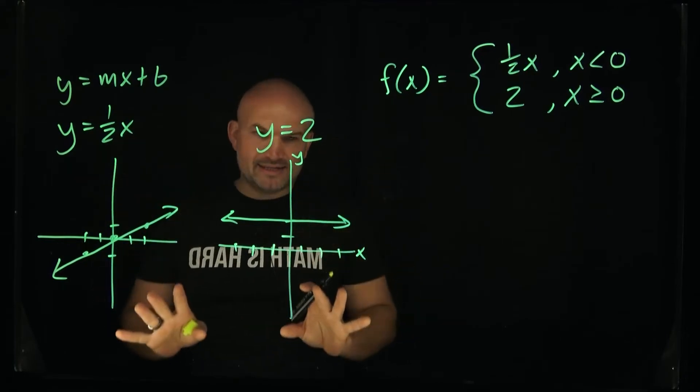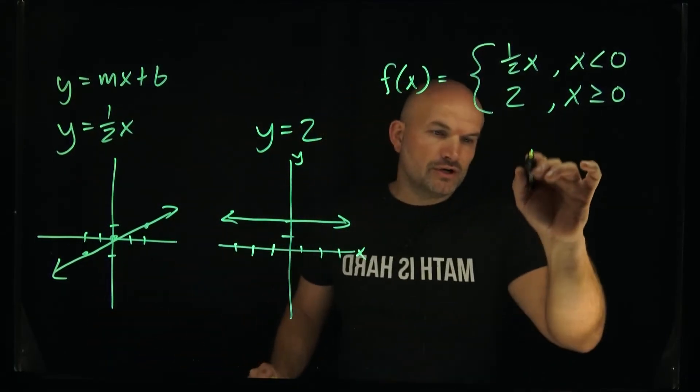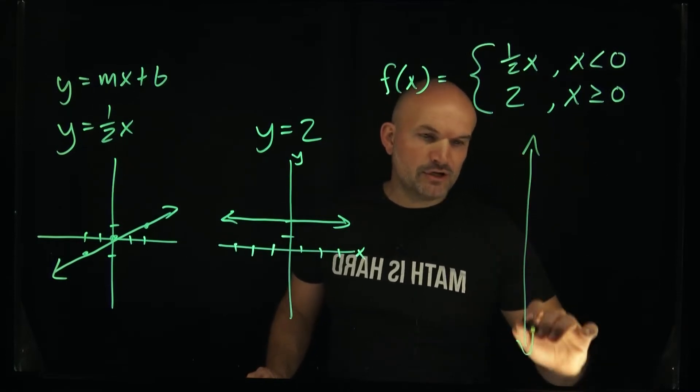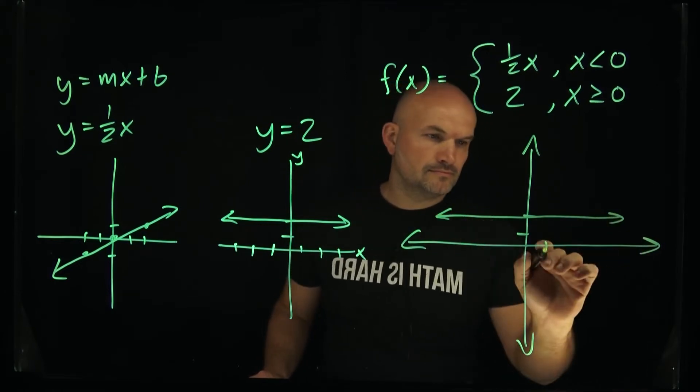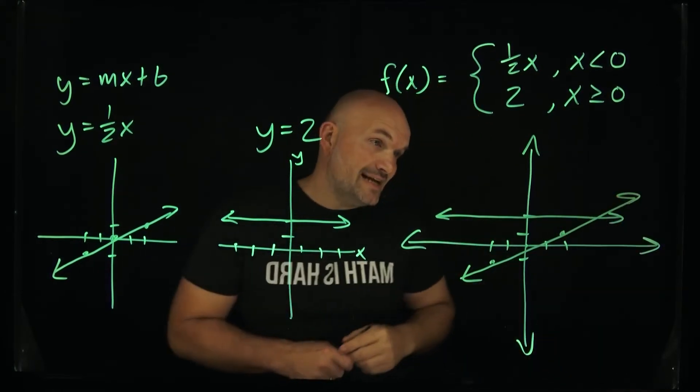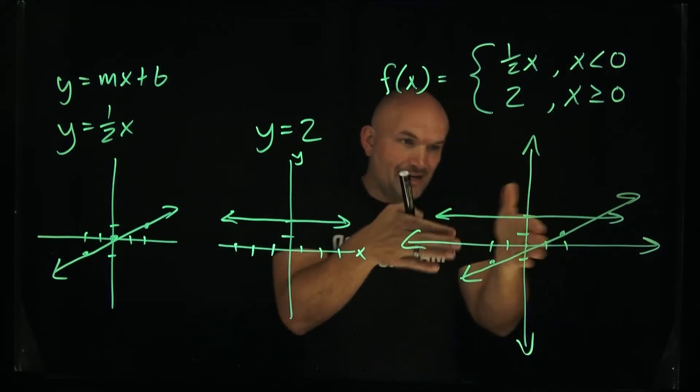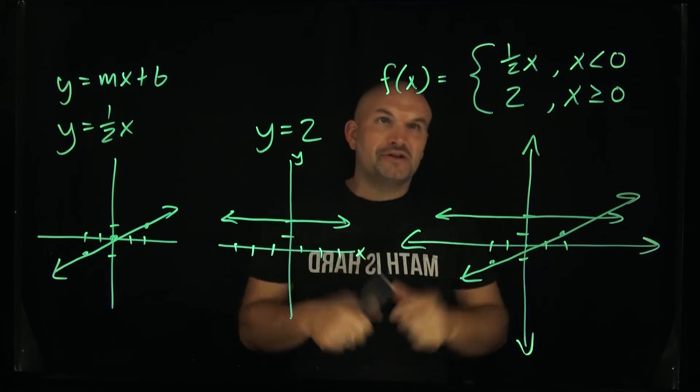Now the problem is if we were to combine these on the same graph we would no longer have a function, because remember when you're graphing a function it has to pass the vertical line test. And you can see these two graphs as they are don't pass the vertical line test. For all values they fail the vertical line test.